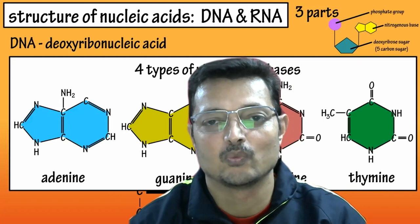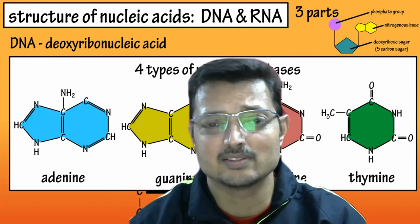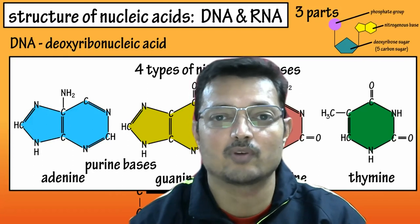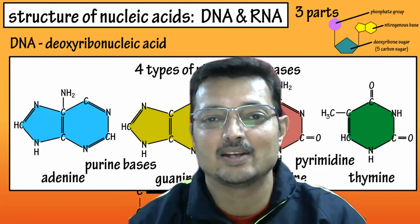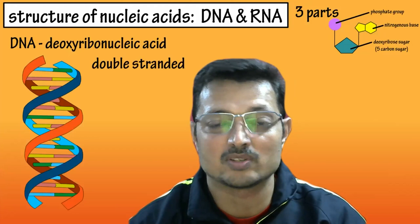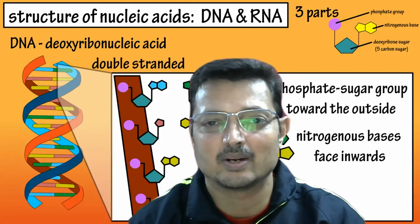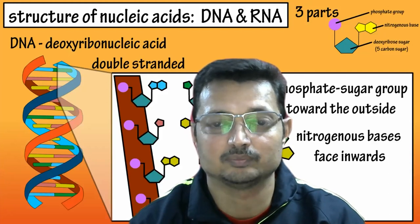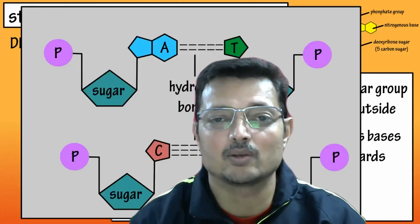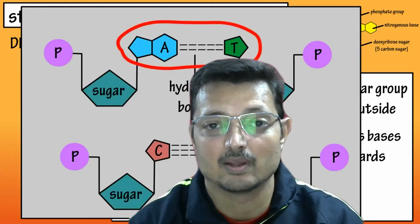So we can take some dateline to understand how it evolved. In 1869, Frederick Miescher discovered nuclein from the nucleus, but its molecular nature was not established. By 1900, the work of Mendel was rediscovered. In 1902, the chromosomal theory of inheritance came into existence, but that also could not throw much light on the molecular nature. It was only by 1926 that the quest for finding the molecular nature of genetic material came into existence.